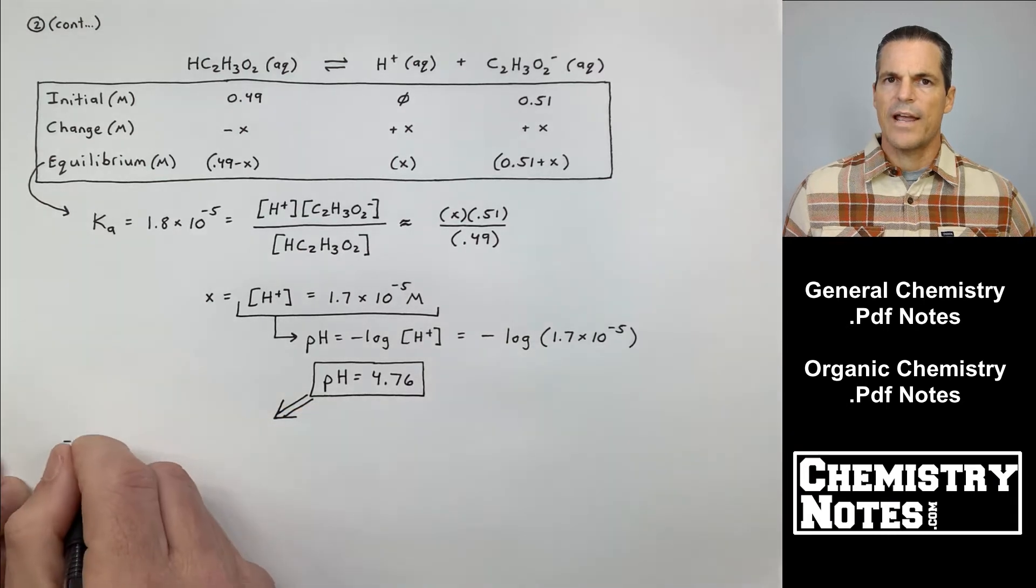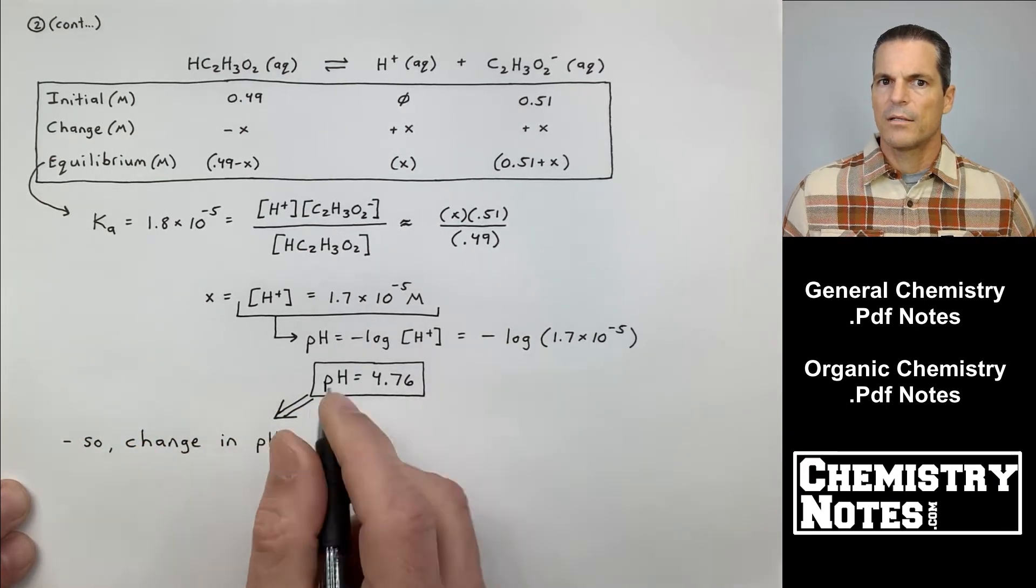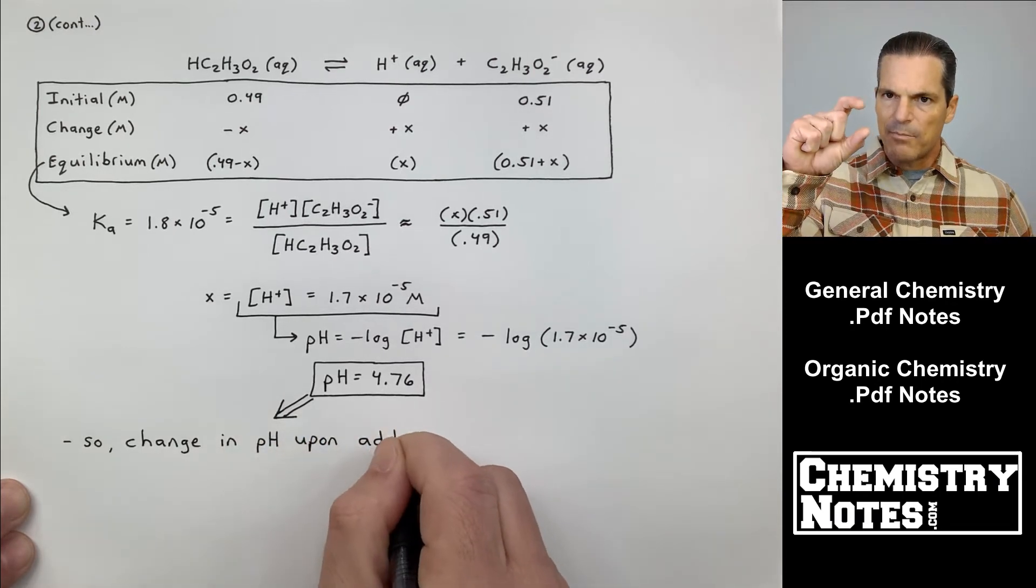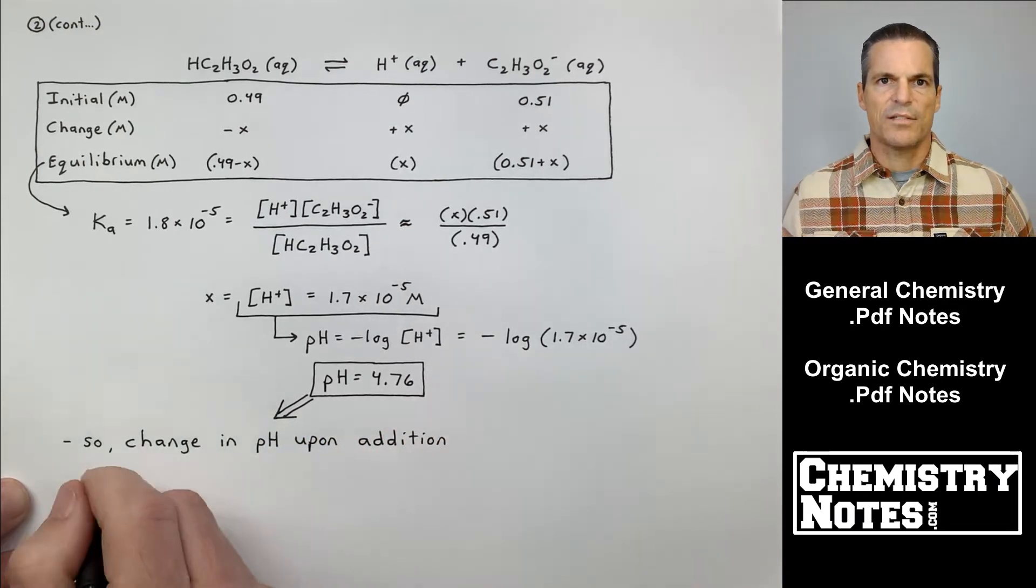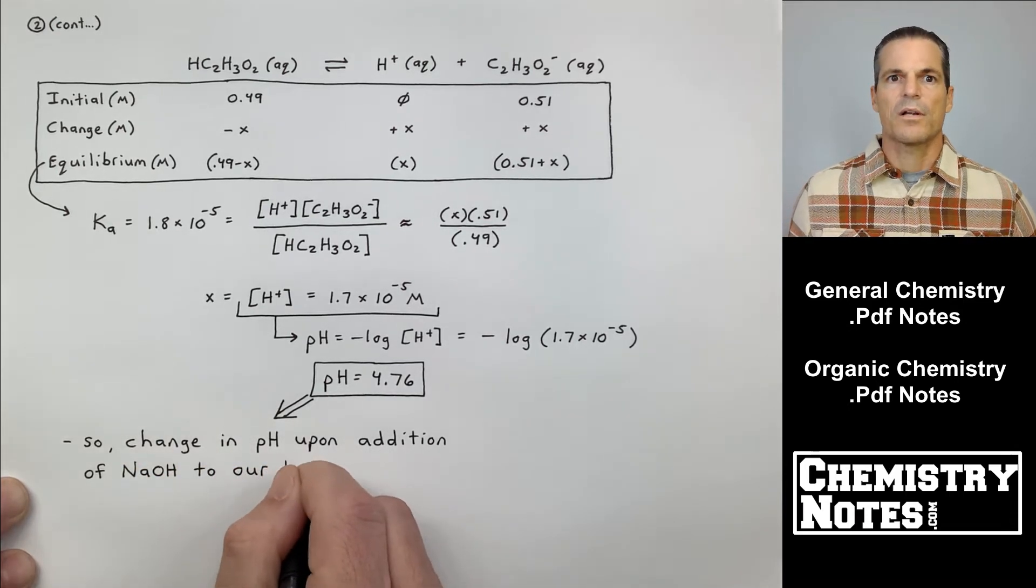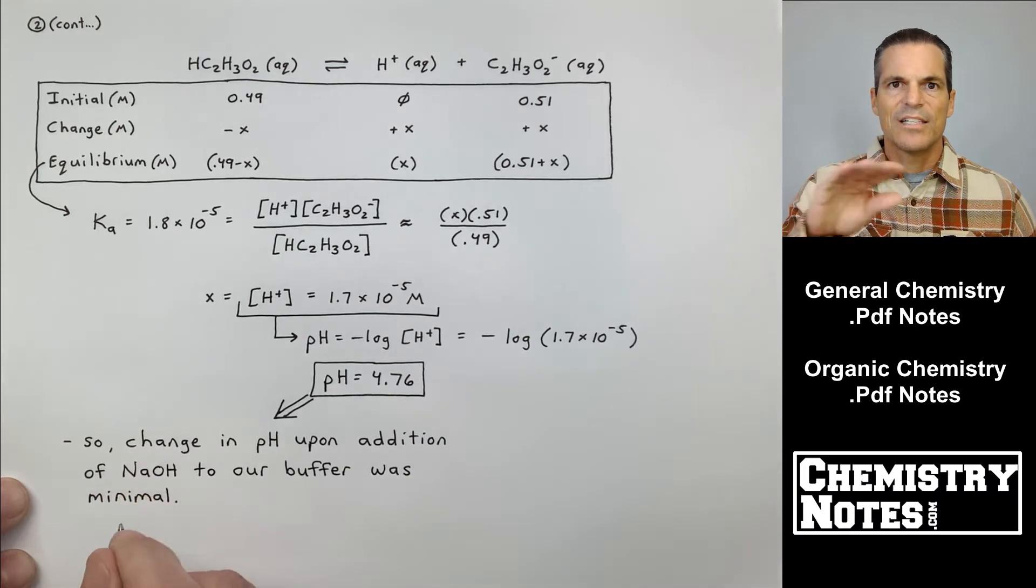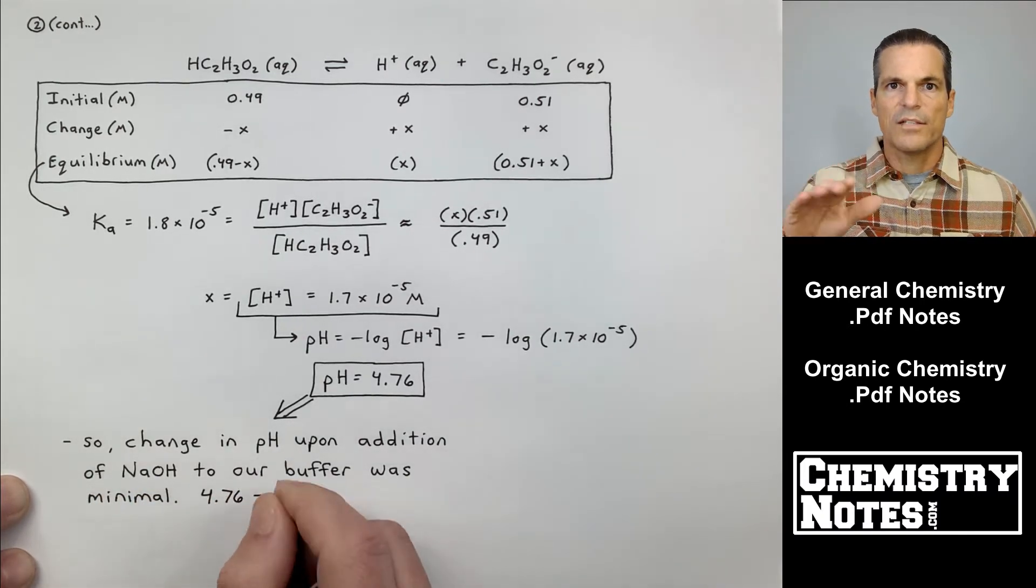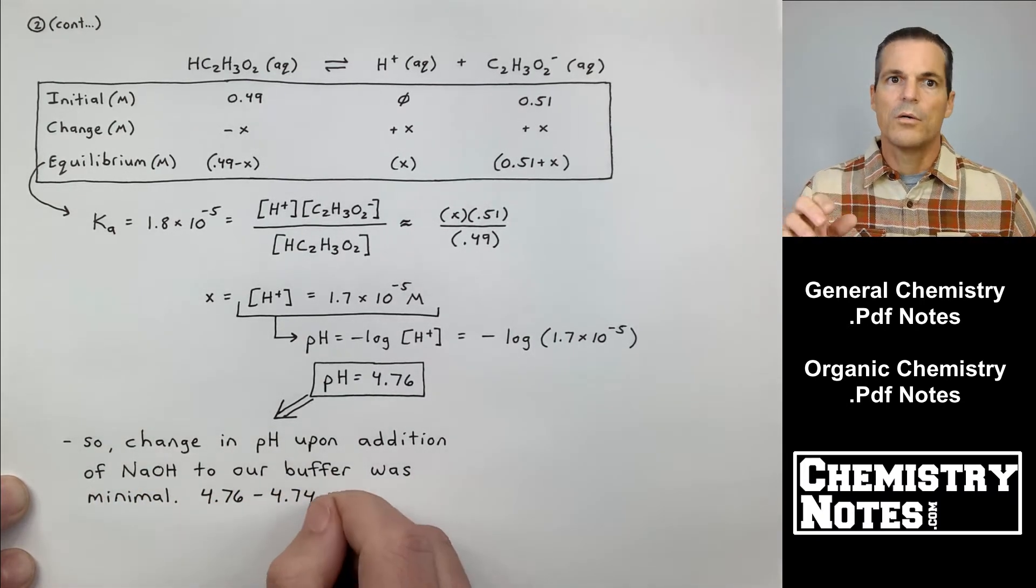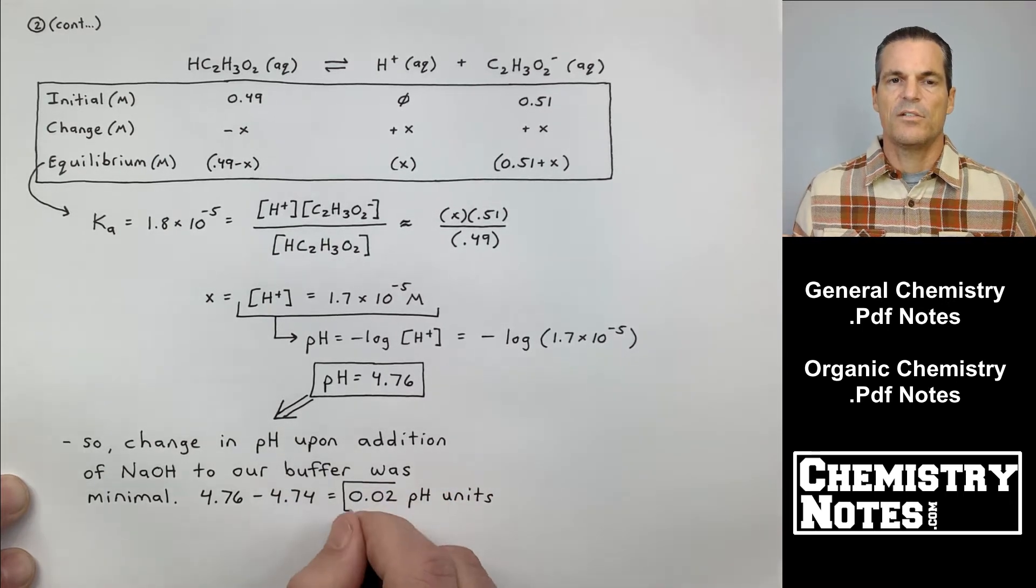What was it before I added OH-? It was 4.74, right? So I've only gone up 0.02 pH units, and I added a really strong base. Buffers work, and they work for the reasons I just showed you. That OH- is quenched, it goes away, turns into H2O by reacting with the HC2H3O2.